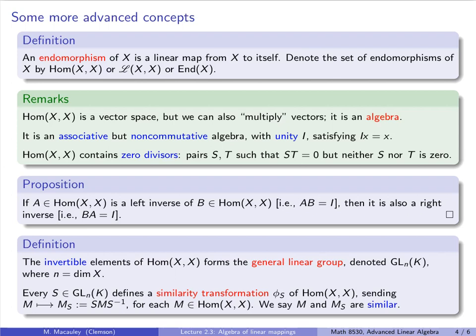The concept of an invertible endomorphism comes up throughout this class, especially because every such S defines a similarity transformation of the space of endomorphisms. This is a bijection sending a linear map M to SMS⁻¹, sometimes written M_S or M^S. We say linear maps M and SMS⁻¹ are similar. Similar matrices have the same eigenvalues and determinants. We will see in a few lectures that similar maps actually represent the exact same linear map under a change of basis, which we'll explore in spectral theory, Jordan canonical form, and rational canonical form.